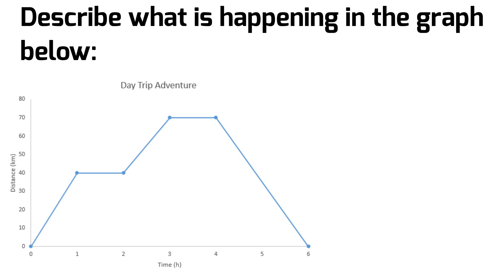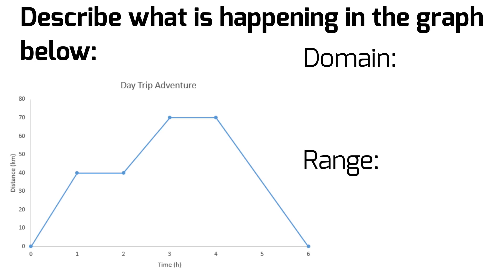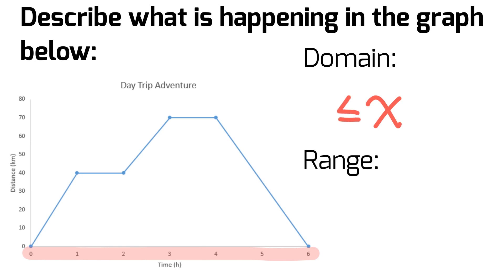Let's start by talking about two new things: domain and range. Basically, the domain is all of the values that x can be. Let's highlight the values — the labels on the x-axis — and it runs from 0 to 6. The lowest value x can be is 0 on that graph and the highest value is 6, so we would say that x is between 0 and 6, and that's our domain.